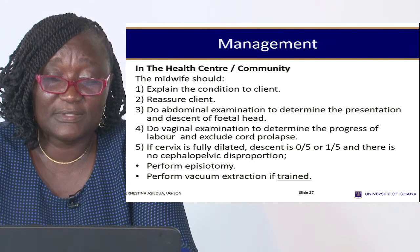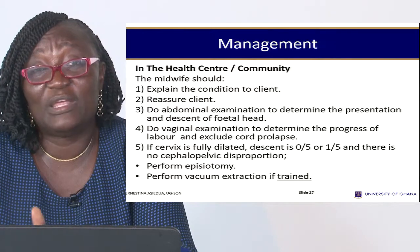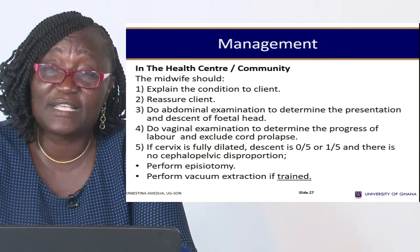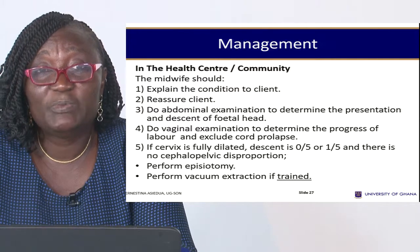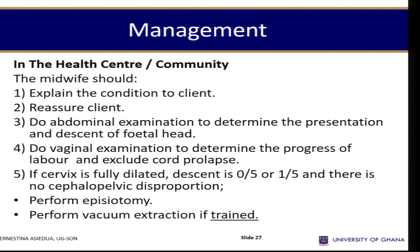For management of fetal distress, at the community centre or health centre: explain the condition to the client and reassure them. Do abdominal examination to determine the presentation and descent of the fetal head, then do a general examination. Find out if there is progress in labour — if labour is imminent, hasten it. If you find a cord around the neck or a prolapse of the cord, that identifies the cause and you manage accordingly.